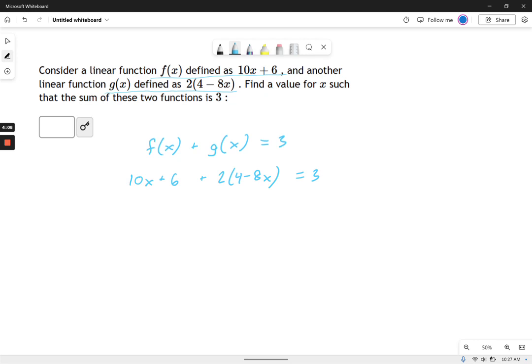So now we've got ourselves an algebra equation. Solving this should be a straightforward exercise of combining like terms and so on, distributing the multiplication in this case. So 2 times 4 is 8. 2 times negative 8, negative 16.